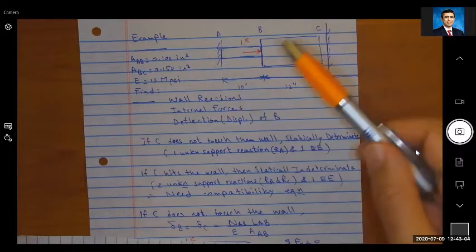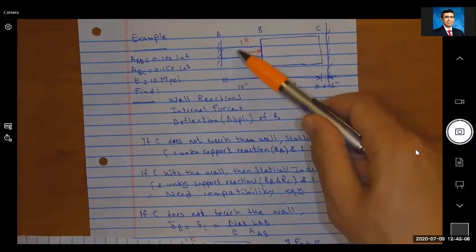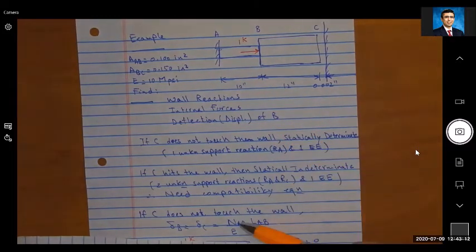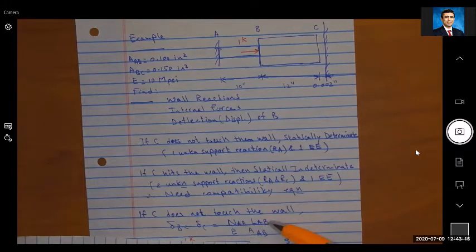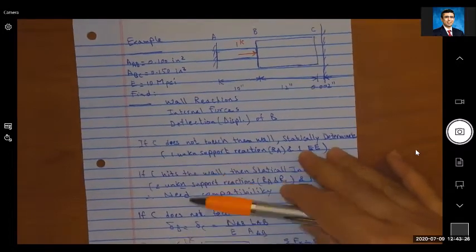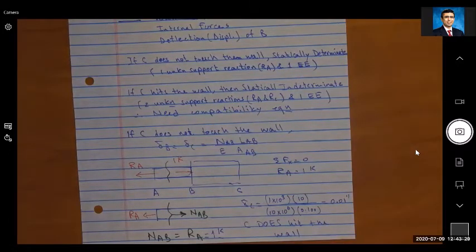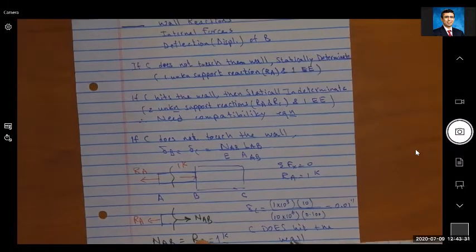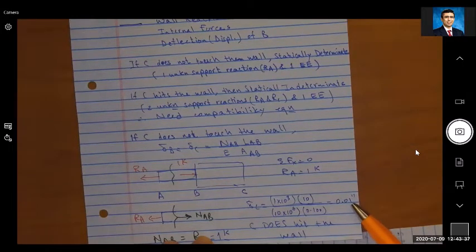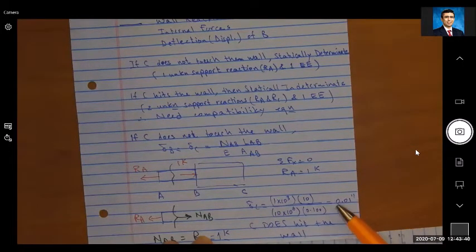Elongation of AB: PL over EA. And instead of PL, I always like to use the internal force in AB, so I call it the normal force in AB times the length of AB divided by E divided by the area of AB. We can plug some numbers quickly here, and I find that this delta C, which is equal to delta B, is equal to 0.01 inch. 0.01 inch is greater than 0.002, right?